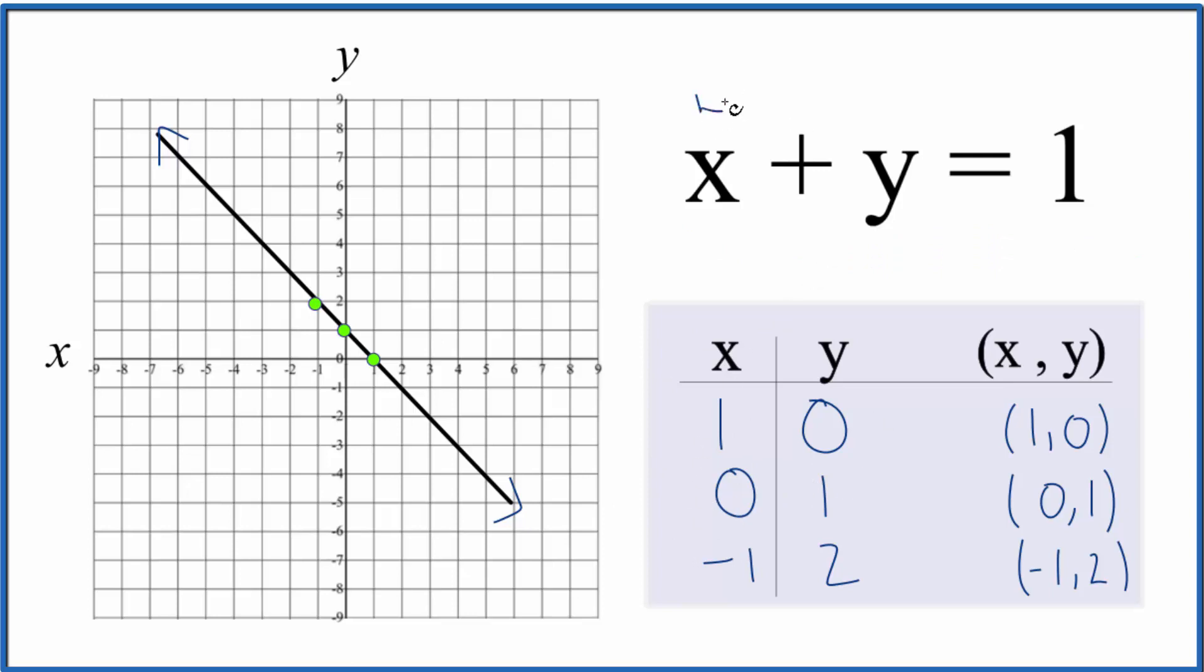Say we put 4 for x. If x is 4, y would have to be negative 3 to give us this value of 1. So we go to 4 on the x axis and 1, 2, negative 3. Right there it is. And you can put really any points in and they'll show up on our line here.